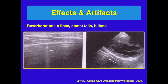Reverberation artifacts include things such as A lines, comet tails, and B lines — you'll learn what these are in other modules. Essentially they cause a repeat of an image. If you look on the right, you see a bright white pericardium, and the two arrows shown are actually artifacts, not actual structures.